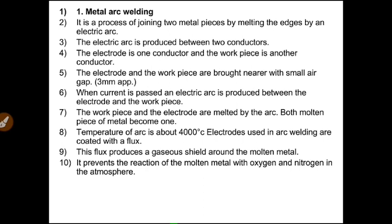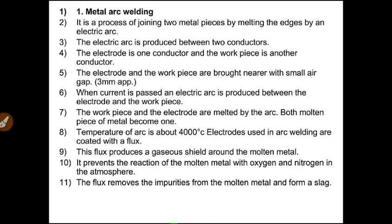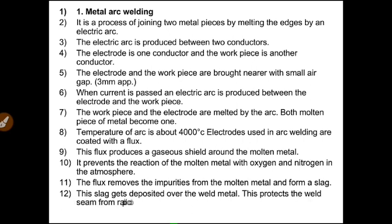The electrodes are coated with flux. The flux produces a gaseous shield around the molten metal, protecting it from atmospheric air, oxygen, and nitrogen. The flux also removes impurities from the molten metal, forming slag. This slag gets deposited over the weld metal on the joint. The slag acts as a protective layer and also controls the rate of cooling of the weld.